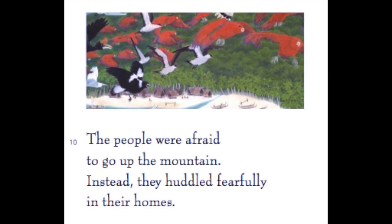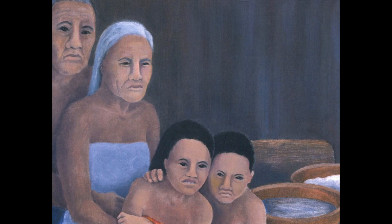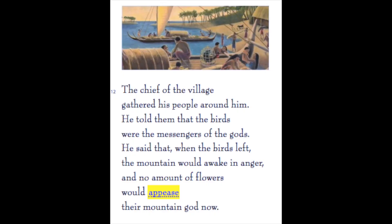'The people were afraid to go up the mountain. Instead, they huddled fearfully in their homes. The parrots and all the other birds flew screeching and chattering up into the sky. They made a great, colorful, noisy cloud, which flew away across the sea in search of another island on which to live.' I want you to check out the illustration — what does it tell you about the island people's feelings that the text does not? Look at the children and their facial expressions. The chief told his people that the birds were the messengers of the gods, and that the mountain would awaken in anger and no amount of flowers would appease their mountain god now.